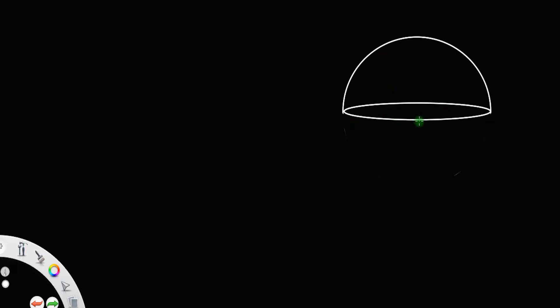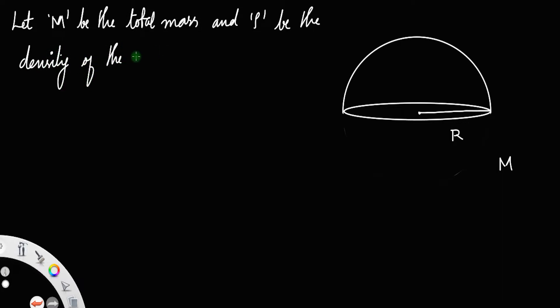Consider a solid hemisphere of radius r. Let M be the mass of the solid hemisphere and let rho be its density. Let M be the total mass and rho be the density of the hemisphere.